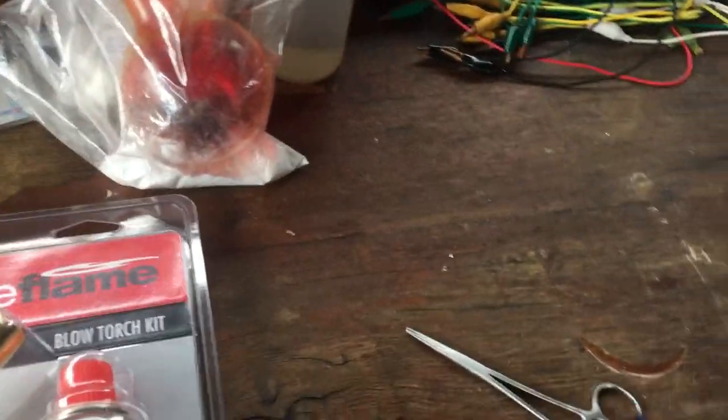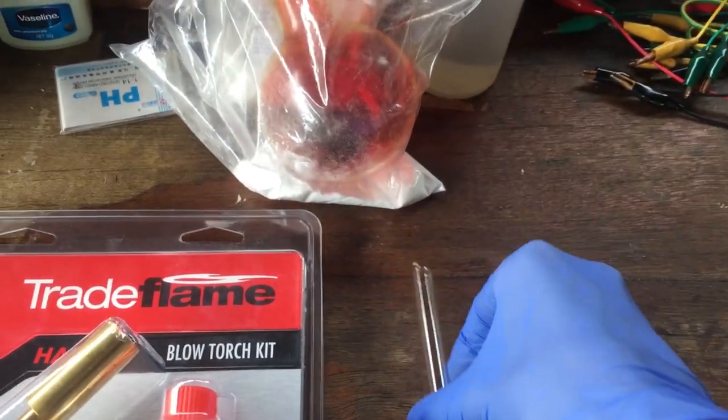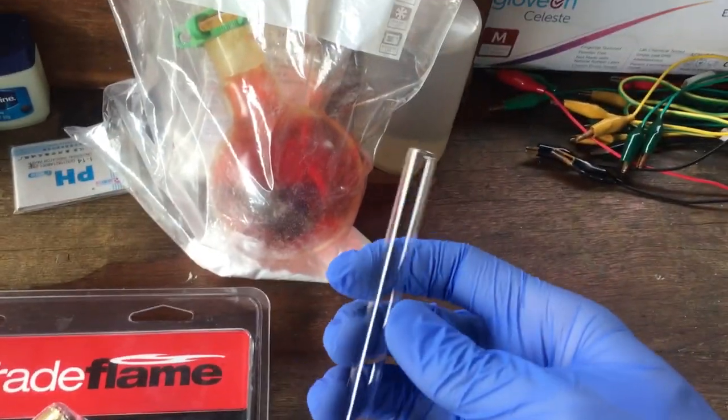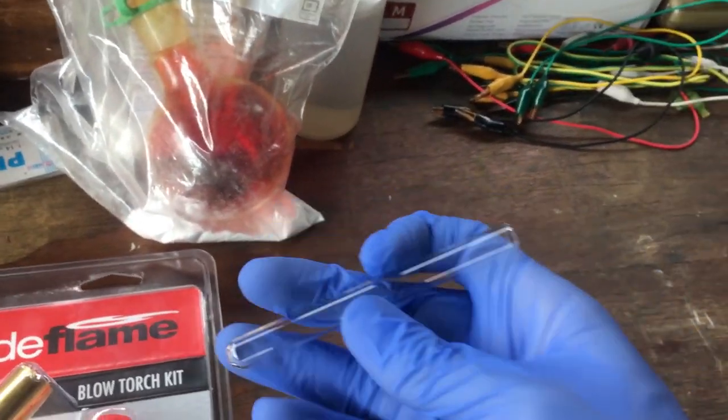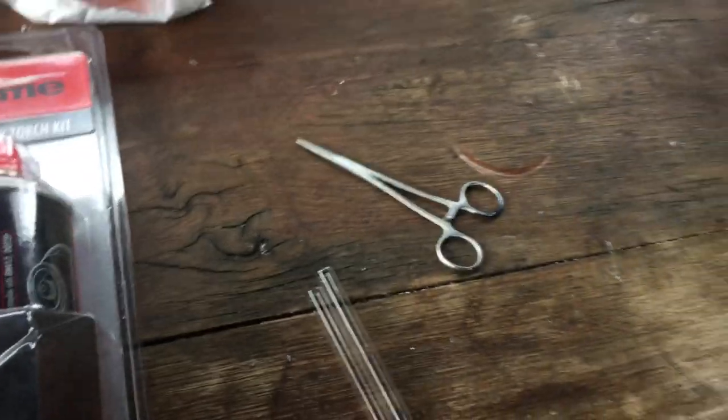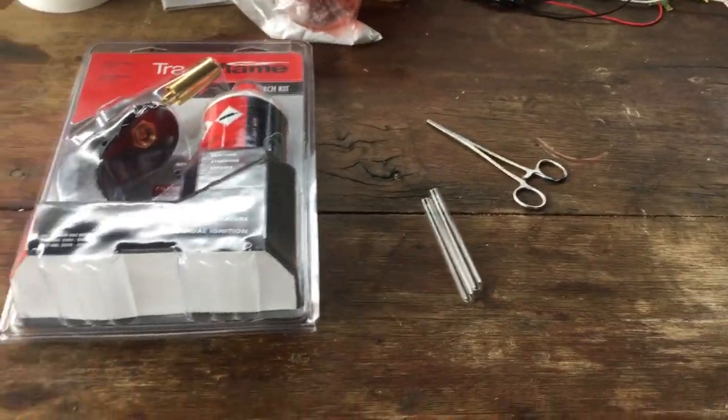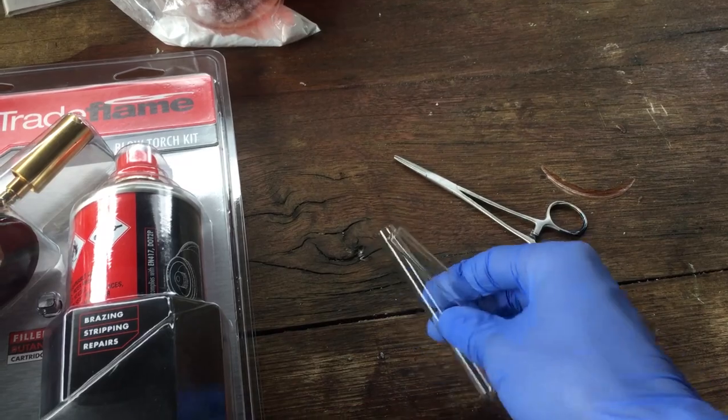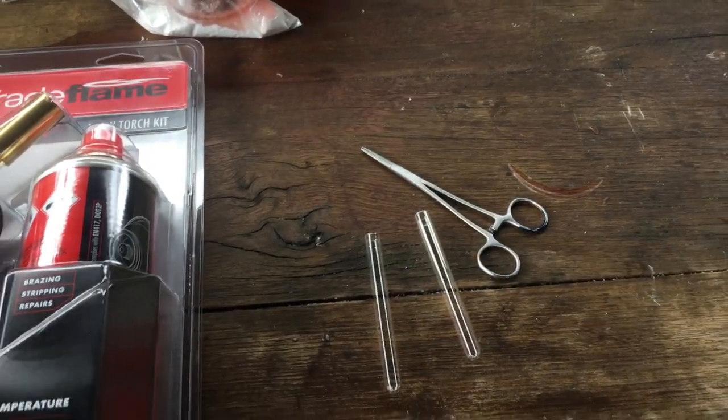But anyway, what we're going to do today is try to seal that bromine in ampoules that we're going to make from test tubes. So hopefully this will be a short video where you just get to watch me make ampoules really badly.